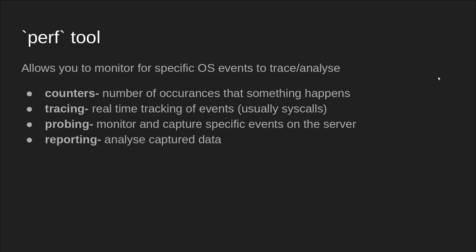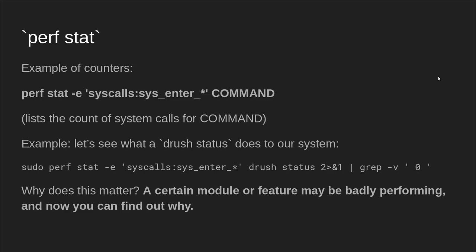So perf allows you to monitor for specific operating system events. You can access counters — the number of occurrences that something happens on your system. You can also trace — real-time tracking of processes and the system at large, which is why I did the syscalls introduction earlier. We can do probing — you can set up a trace point or a probe for certain events and capture that information later. And then finally, there's reporting — you can do your information gathering and then run a report to see what happened after the fact. So, example of counters: there's this command called perf stat.